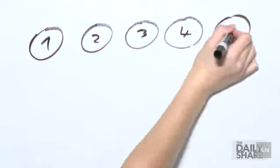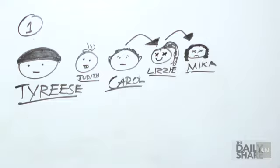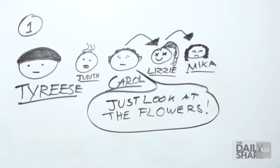The gang splits up into five different groups. Group one, crazy Lizzy turns Mika into a zombie, so Carol has to do the unthinkable and kills Lizzy. I'm still recovering from that.